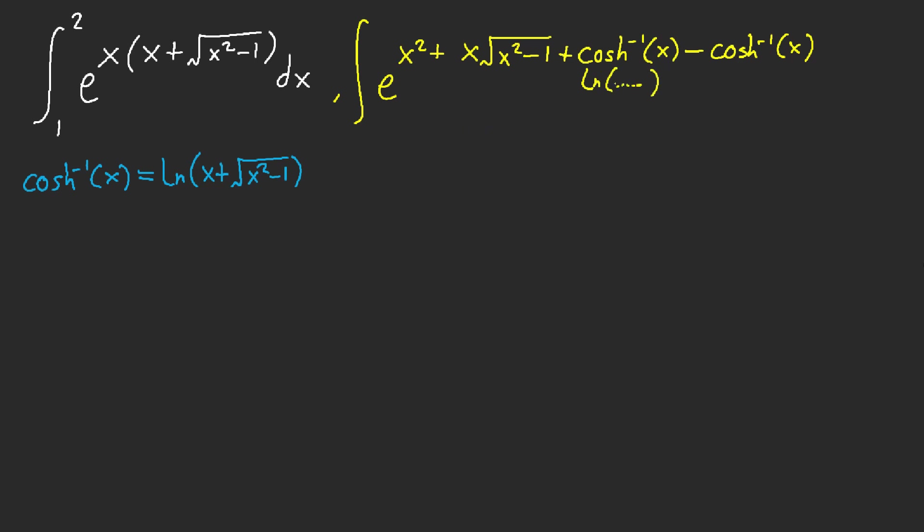So that the e to the ln, whatever this is, we get e to the x squared plus x square root of x squared minus one minus inverse cosh. And then we would end up with x plus square root of x squared minus one dx.